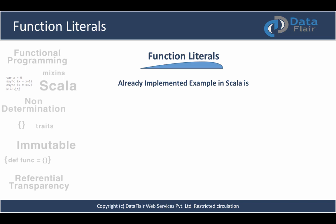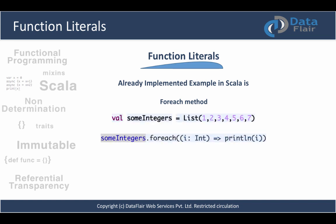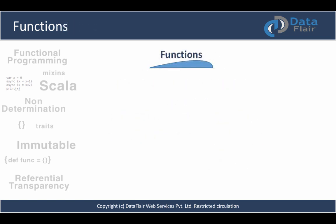An example of an already-implemented function literal is the forEach method. We have a someIntegers value containing a list of integers from 1 to 7. We traverse the list and print each element using forEach. The part passed to forEach is a function literal — it expects an integer, given reference name i, and converts it by printing that value.